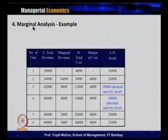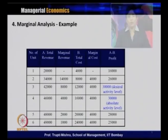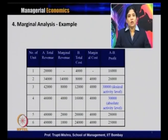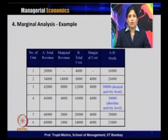We will take an example to understand marginal analysis using a hypothetical table. There are 6 units of output. The second column gives total revenue, the third gives marginal revenue, the fourth gives total cost, the fifth gives marginal cost, and the last column gives profit. Total profit equals total revenue minus total cost. For one unit of output, total revenue is 20,000 and total cost is 4,000, giving profit of 16,000. Since there is only one unit, there is no marginal revenue associated with this unit.